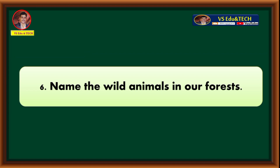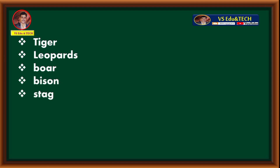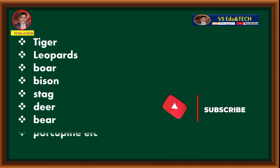Question number six: name the wild animals in our forests. The wild animals found in Karnataka's forests include Tiger, Leopards, Boar, Bison, Stag, Deer, Bear, Porcupine, and others.